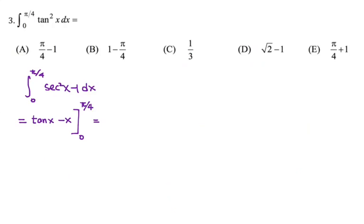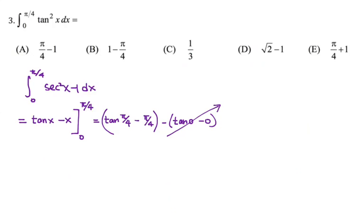Once you plug in pi over 4, we get tangent of pi over 4 minus pi over 4, minus tangent of 0 minus 0. We know tangent of 0 and 0 are entirely equal to 0, so we can cancel them out. Tangent of pi over 4 equals 1, so the answer is 1 minus pi over 4, which is choice B.